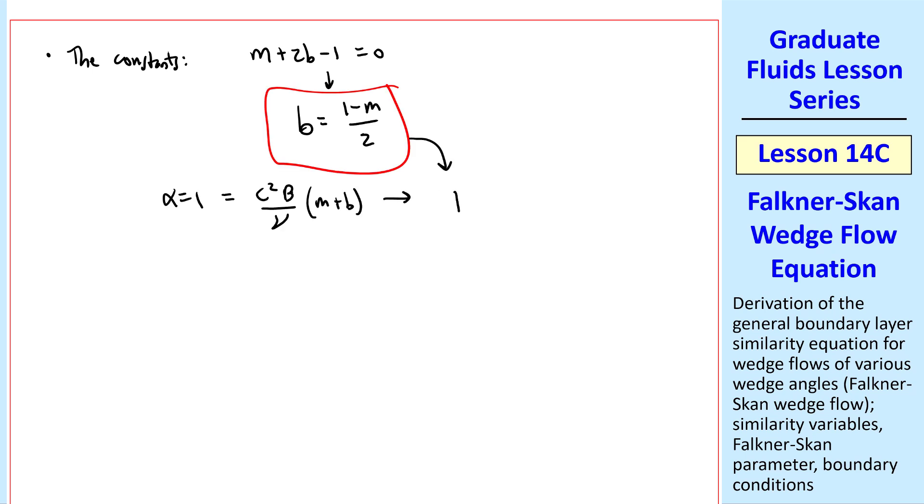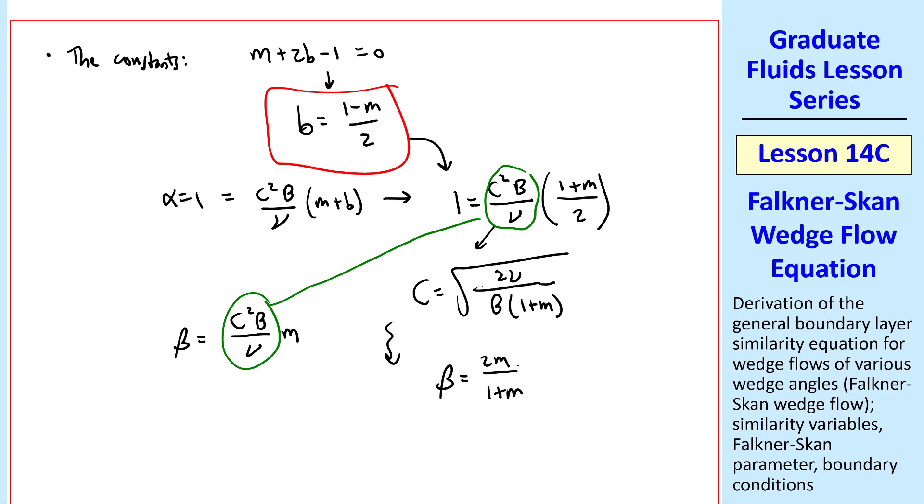We plug in for b and setting alpha equal 1. We get 1 equals c squared B over nu, 1 plus m over 2, which we can solve for c. But beta is c squared capital B over nu, which we also see here. And there's an m in here. And when we plug in c and do a little bit of algebra, we get beta equal 2m over 1 plus m.